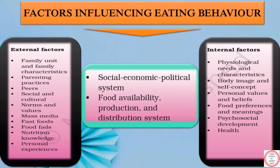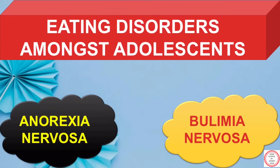Next, we have talked about various factors which influence the eating behavior of adolescents. We have also covered eating disorders which are pretty common amongst adolescents. Basically, we have covered two types of disorders: anorexia nervosa and bulimia nervosa. For better clarity on what both of these disorders are, please check out the links mentioned in the description box below.